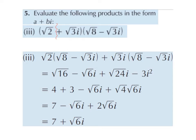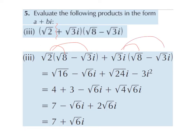Multiplying out the brackets: root 2 by root 8 gives me root 16, because 2 by 8 is 16. Root 2 by minus root 3i gives me minus root 6i — the plus by minus gives the minus. Root 2 by root 3 gives root 6, and we stick on the i. Then root 3i multiplied by root 8: root 3 by root 8 is root 24, and we stick on the i. Then root 3i multiplied by minus root 3i gives minus 3i squared — the plus by minus gives the minus, root 3 by root 3 gives 3, and i by i gives i squared.